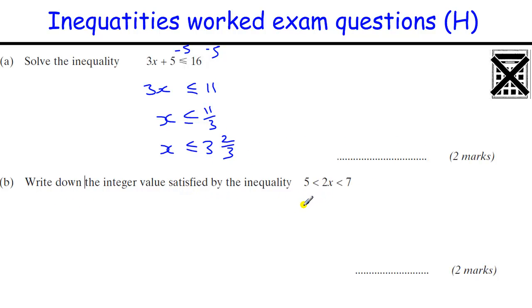Write down the integer that satisfies that, so divide by 2, we get 2.5 less than x is less than 3.5, and the only integer value, is the whole number 3.